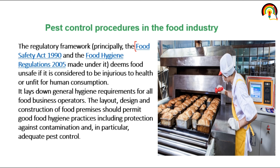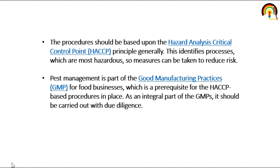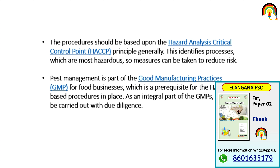These regulations work whether the food is safe or unsafe, because unsafe food is injurious to health or unfit for human consumption. They lay down general hygiene requirements for all food business operators. The layout, design and construction of food premises should permit good hygiene practices, including protection against contamination — in particular, adequate pest control.